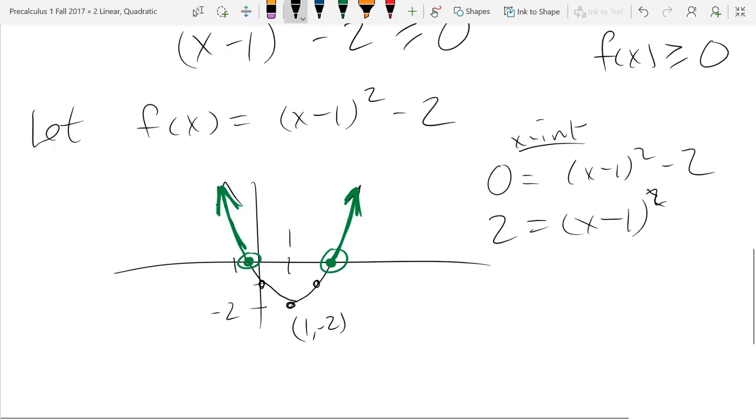Now I can square root with an equal sign. We get plus or minus square root 2 equals x minus 1, so x equals 1 plus or minus square root 2.